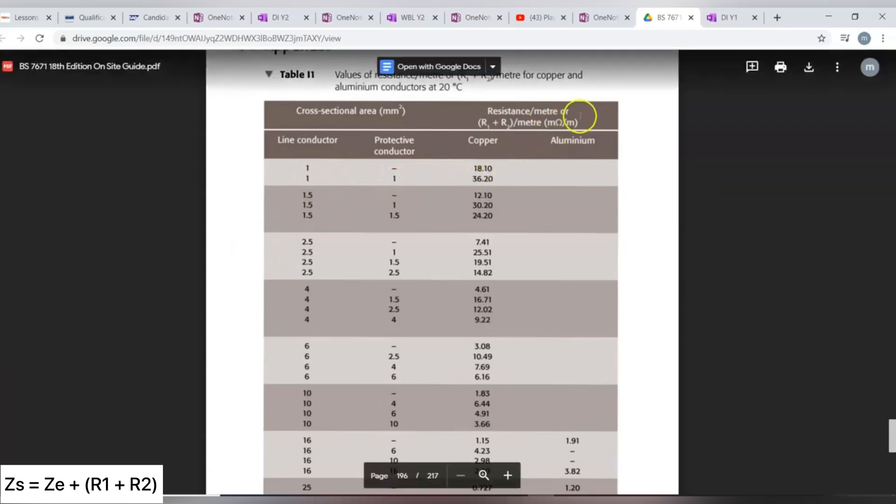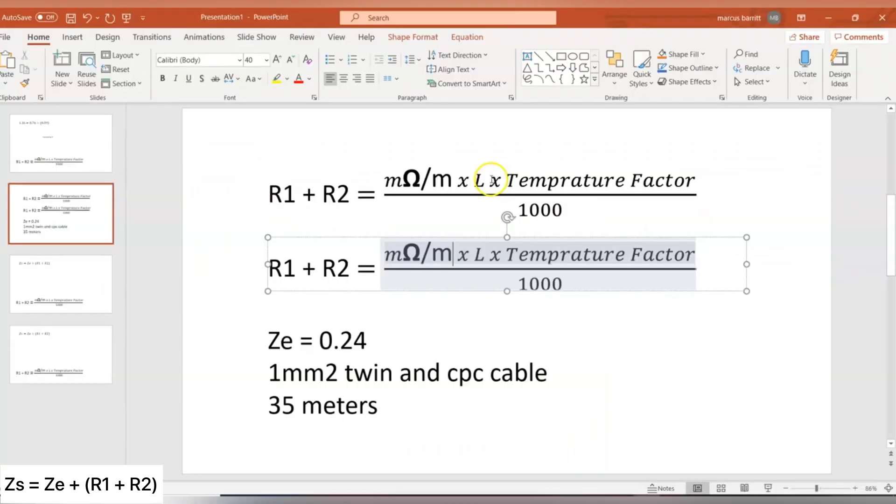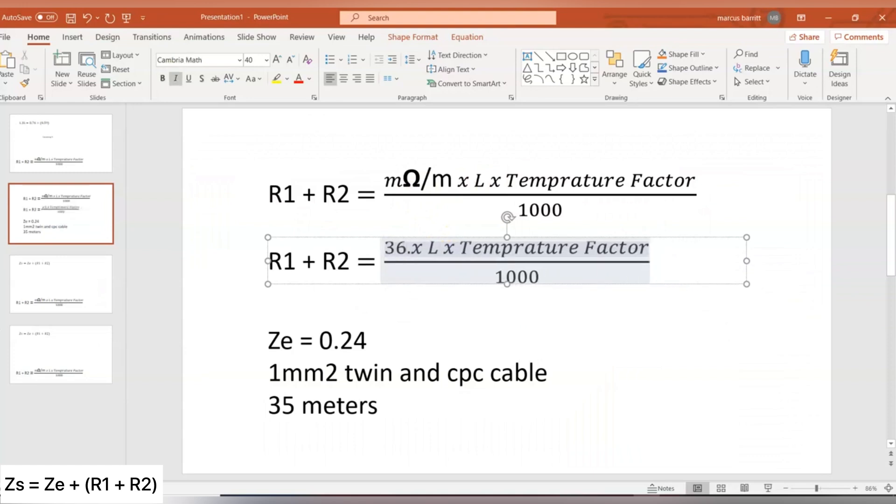So that gives us a milliohm per metre, as you can see here, with R1 and R2 of 36.20. So if we input in here, 36.20, we know the length is 35 metres.